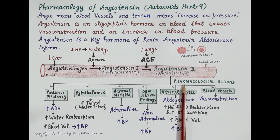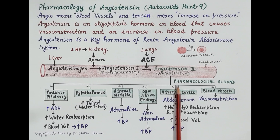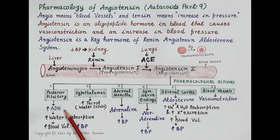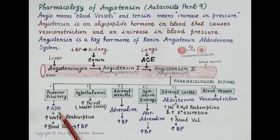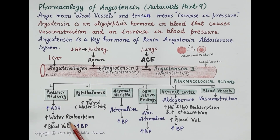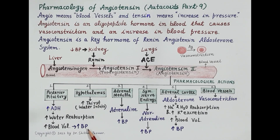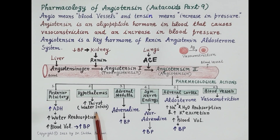The primary function of angiotensin 2 is to increase blood pressure. Angiotensin 2 stimulates the posterior pituitary to release anti-diuretic hormone (ADH). ADH prevents diuresis by increasing reabsorption of water in the collecting ducts of the kidney, which increases blood volume and thereby raises blood pressure.